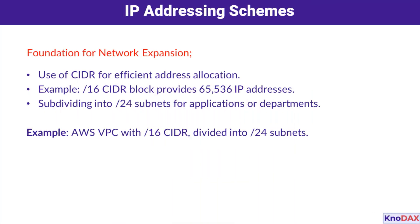IP addressing schemes are like the blueprint for your network. Without a well-planned scheme, expanding your network can become a nightmare. For instance, using a /16 CIDR block for your AWS VPC gives you up to 65,536 IP addresses. These can then be subdivided into smaller subnets, like /24 CIDR blocks, to support different applications or departments. This approach ensures you have room to grow without reconfiguring the entire network.